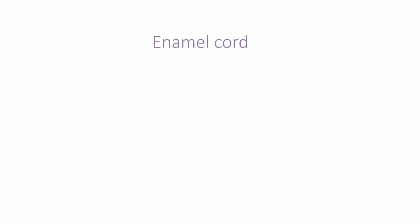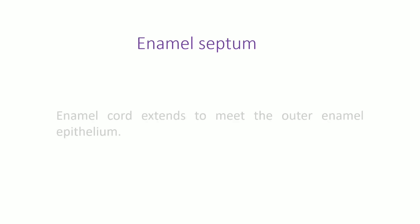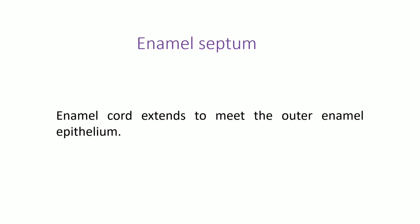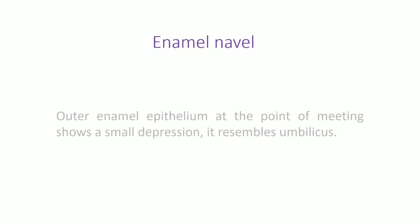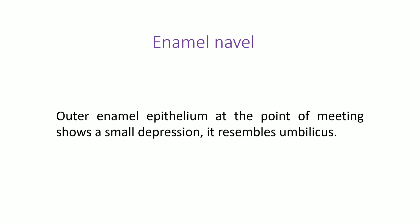Enamel cord is the vertical extension of enamel knot. Enamel septum is formed when the enamel cord extends to meet the outer enamel epithelium. Enamel navel — the outer enamel epithelium at the point of meeting shows a small depression that resembles the umbilicus.